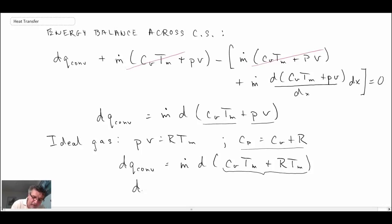And then noting this the Cv plus R that is just Cp Tm. And consequently we can rewrite Q convection as being the following. So that becomes one expression that we can work with and we will be working with that as we go through.